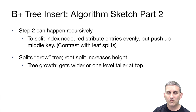Finally, if we have to split the root, that's the way we grow the tree. Splitting grows the tree, and when we split the root, the height of the tree increases, and note that all paths remain the same length. So the way that a B+ tree grows is, most of the time, it gets a little wider in the sense that we split some internal nodes, but sometimes it gets taller when we split the root.